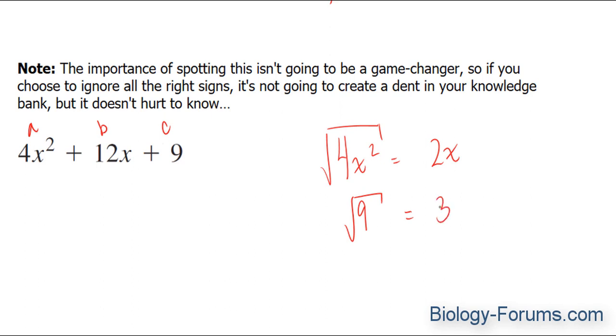The square root of 9 is 3. Now, we need to find out whether 4 times 9, which is 36, and its square root, which is 6, we have to find out whether this is half of 12, and yes, it is.